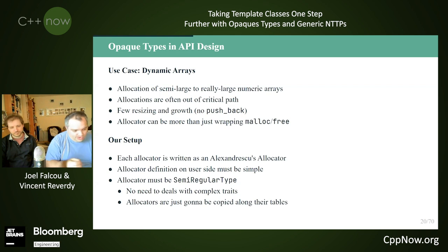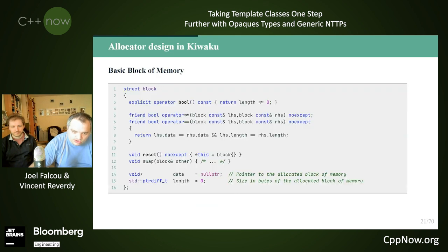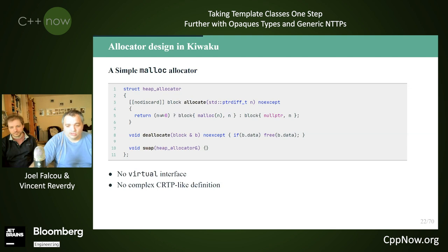On top of that, we push away the notion that people can write an allocator just by writing a structure that matches the allocator concept we need — no CRTP, no public inheritance, no base class. Once we do that, we put it into a box that turns everything into a semi-regular type that we carry along the array. The basic block of memory is rather trivial: a structure containing a pointer to void and a size, with operations to resize, swap, and compare those blocks.